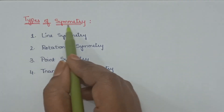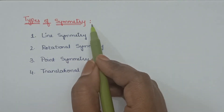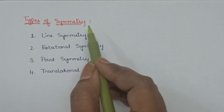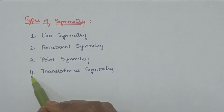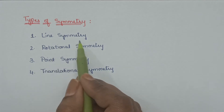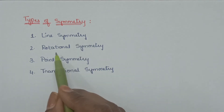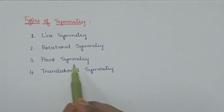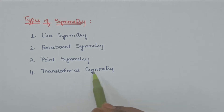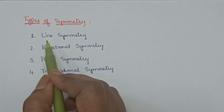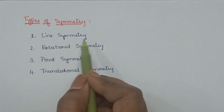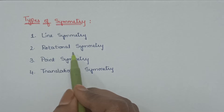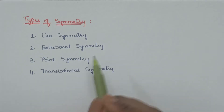Types of symmetry. There are four types of symmetry: line symmetry, rotational symmetry, point symmetry, and translational symmetry. In this class we will talk about line symmetry and rotational symmetry.